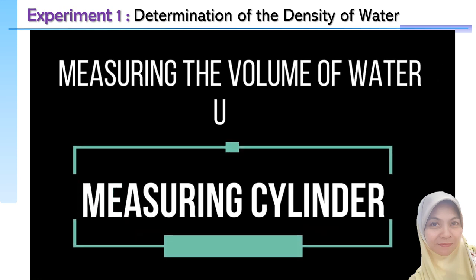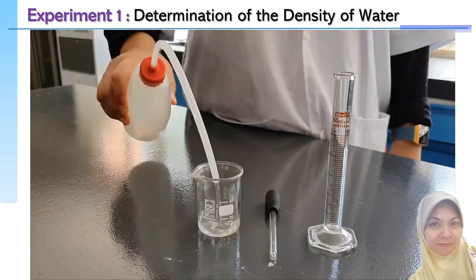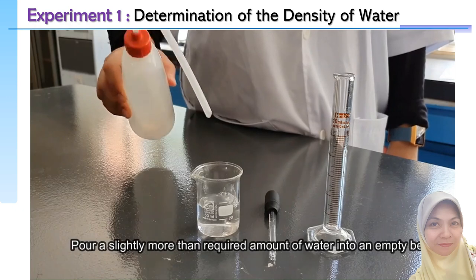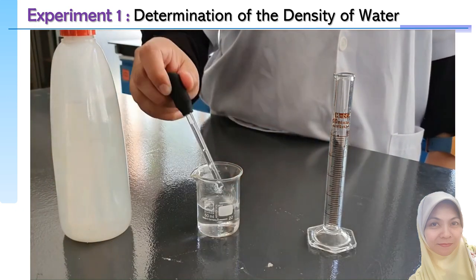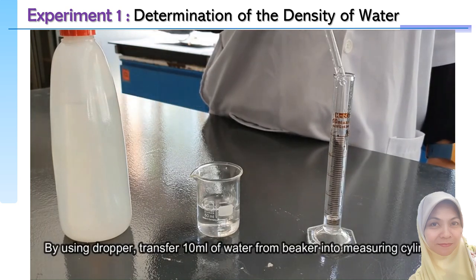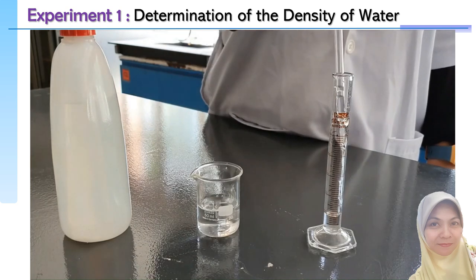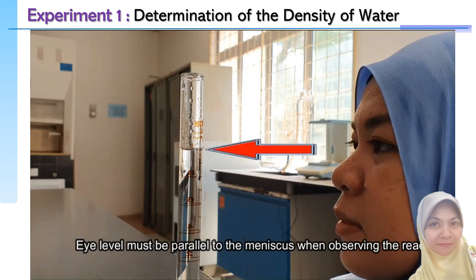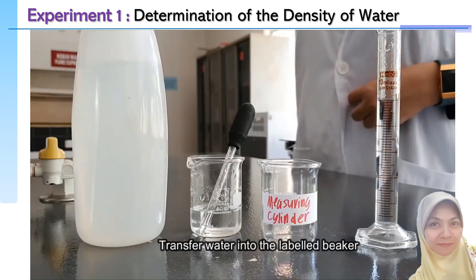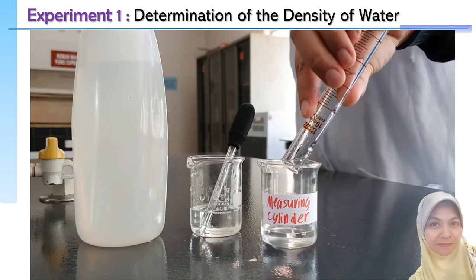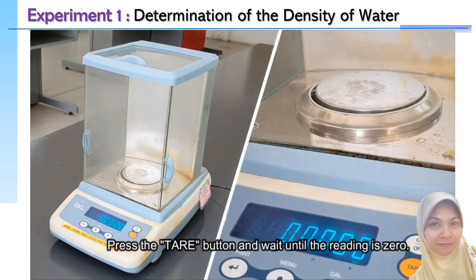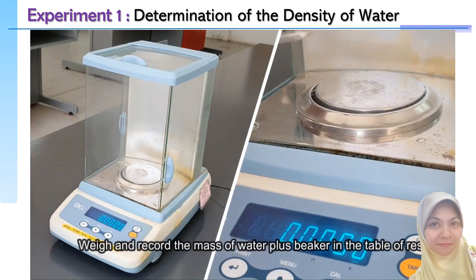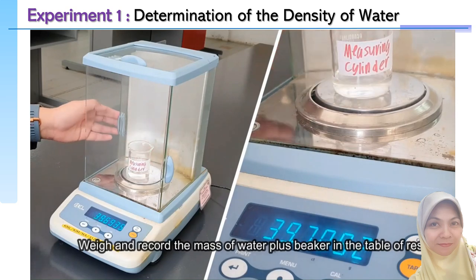Measuring the volume of water using the measuring cylinder: pour a slightly more than required amount of water into an empty beaker. Using a dropper, transfer 10 mL of water from the beaker into the measuring cylinder. This is the meniscus level at 10 mL — eye level must be parallel to the meniscus when observing the reading. Transfer the water into the labeled beaker. Press the T button, wait for zero, then weigh and record the mass of water plus beaker.